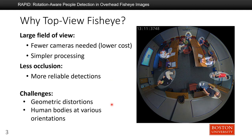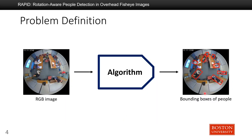However, there are two main challenges for fisheye cameras: fisheye geometric distortion and various human body orientations, as can be seen in this figure. Here is our problem definition: we have an image taken from an overhead fisheye camera, and we want to design an algorithm that can produce bounding boxes that align the human bodies as tightly as possible.